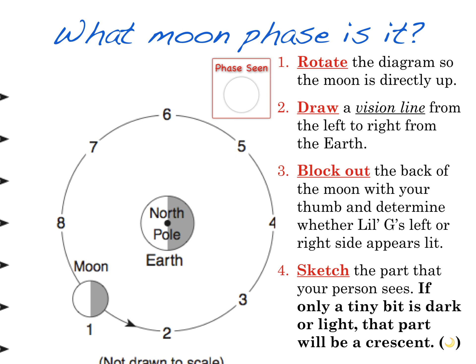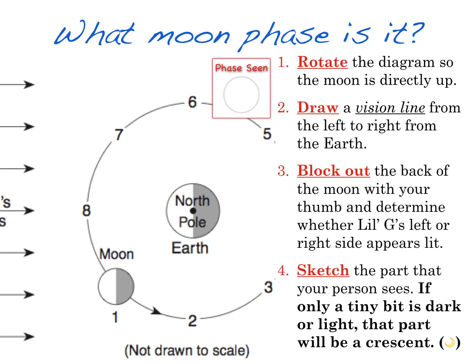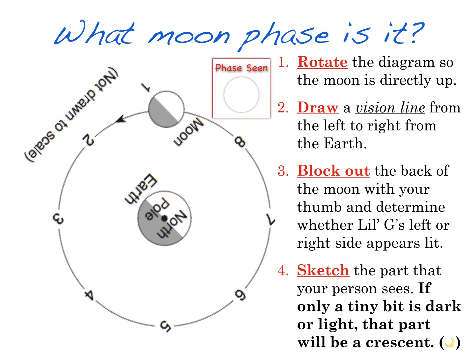The first step is to rotate the diagram so the moon is directly up in the 12 o'clock high noon position. So we're going to do that first. We're going to go ahead and spin that around. Okay, so now that we have the moon in this 12 o'clock high position straight up...